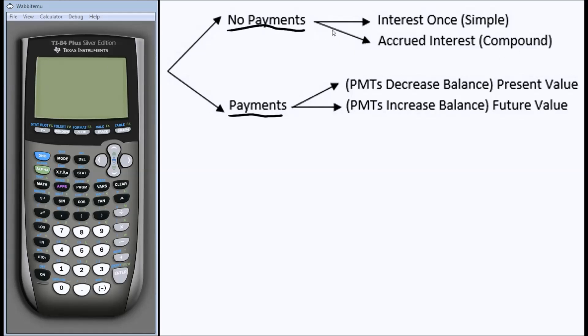If our problem is one where we have no recurring payments, then we have to ask ourselves, how often is interest accrued? Is our problem one where we make an investment, and at the end of that investment, once and only once, interest is applied to that balance? Or if we were to have a loan, and once and only once at the end of that loan, we would have to pay off that entire interest. If that's the case, then we are dealing with simple interest.